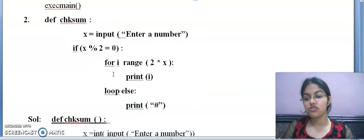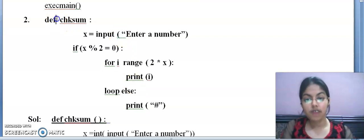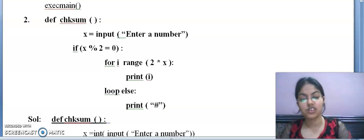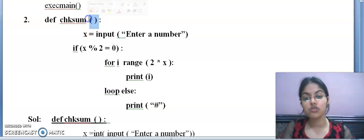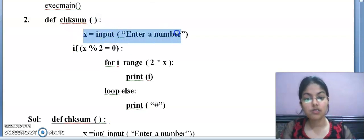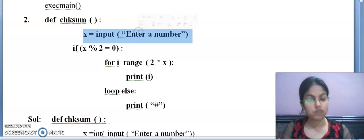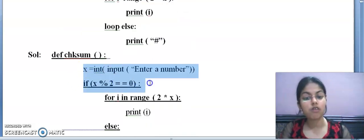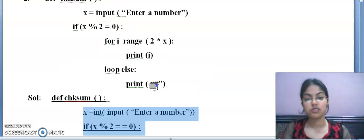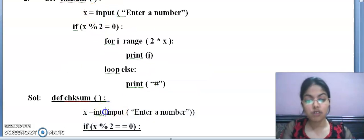Now moving to the next question, again of the same type. Def, this is the keyword. This time it is written in small case letters, so this is correct. Check sum, name of a function. This is a function header statement. After the function header, these brackets are to be used. If x equals to input enter a number. See the difference of indentation between these statements. You have to maintain the same level of indentation. Again here, the int function will be used to convert the string value into integer value.